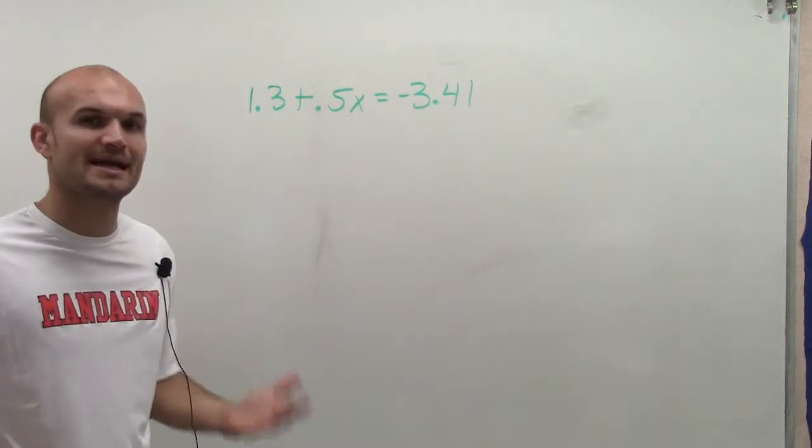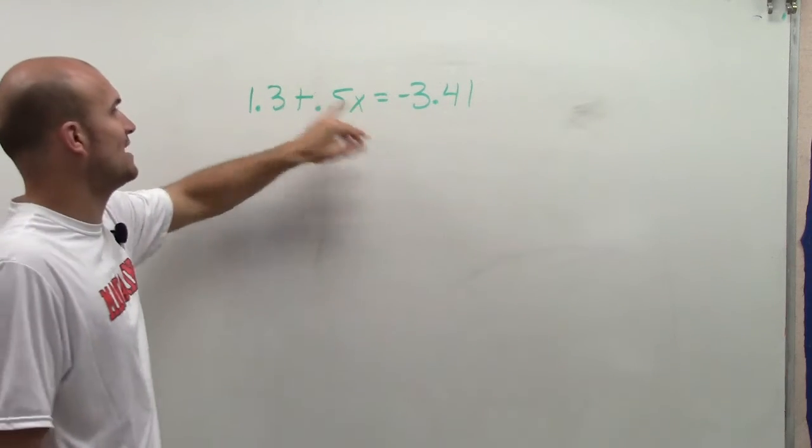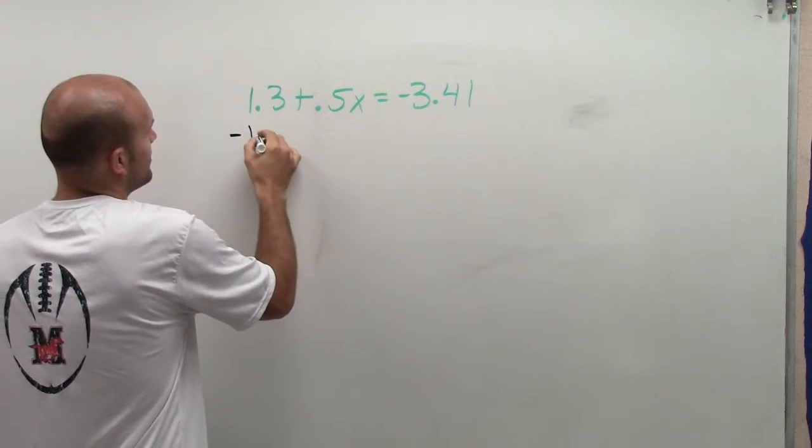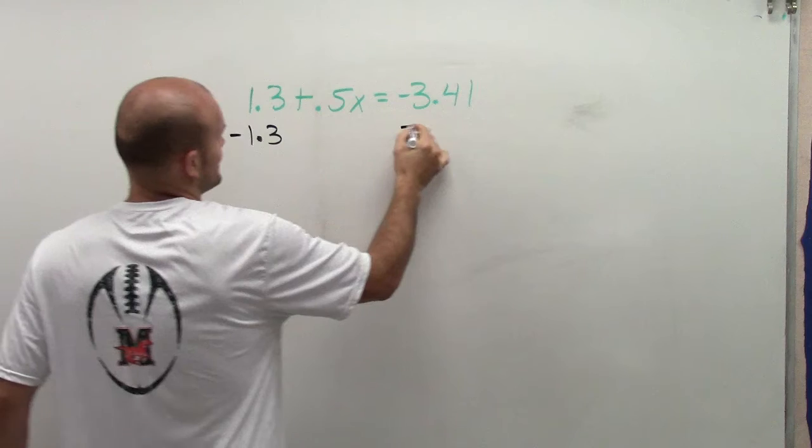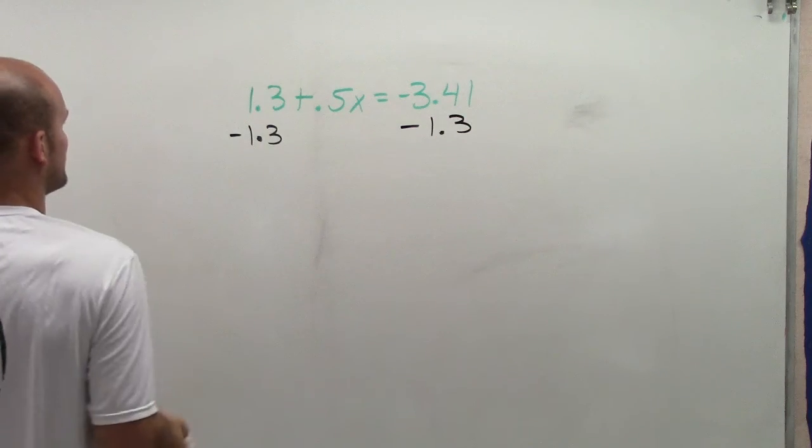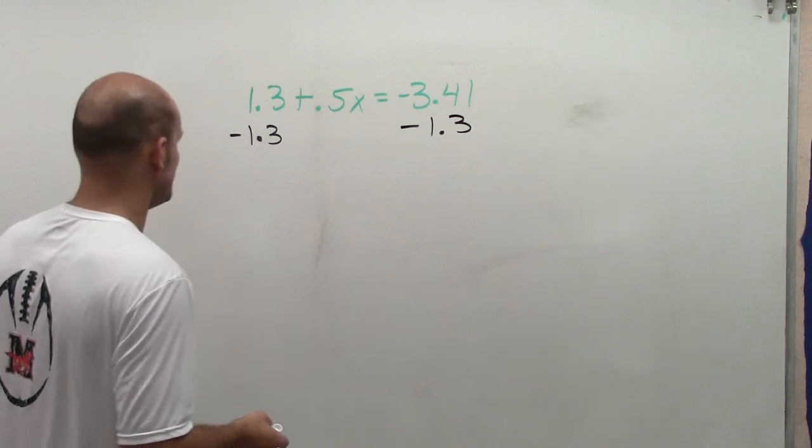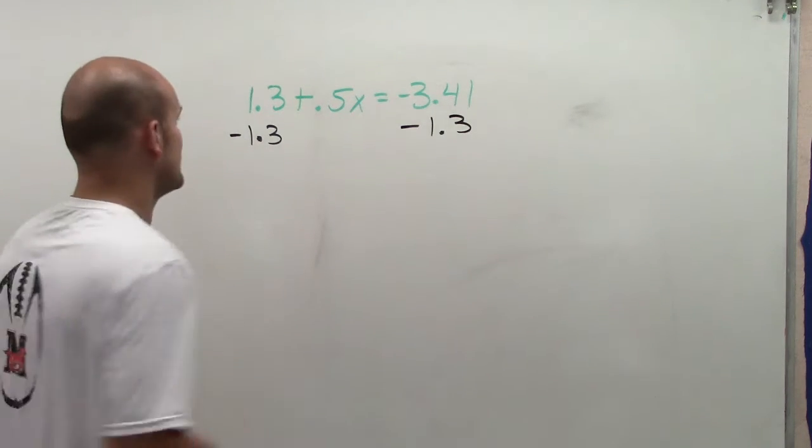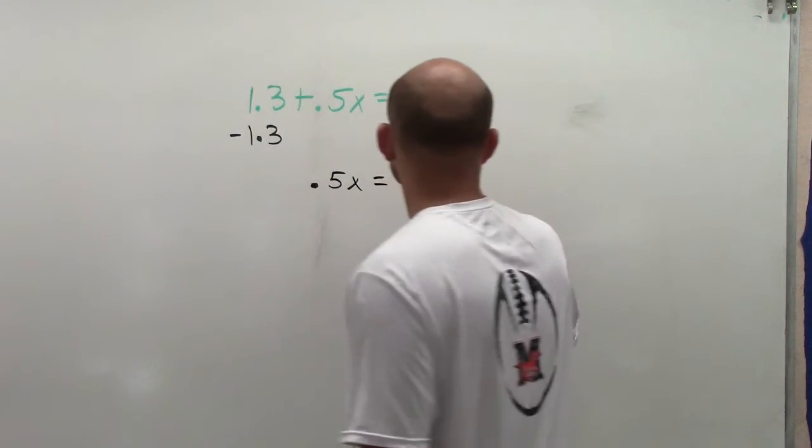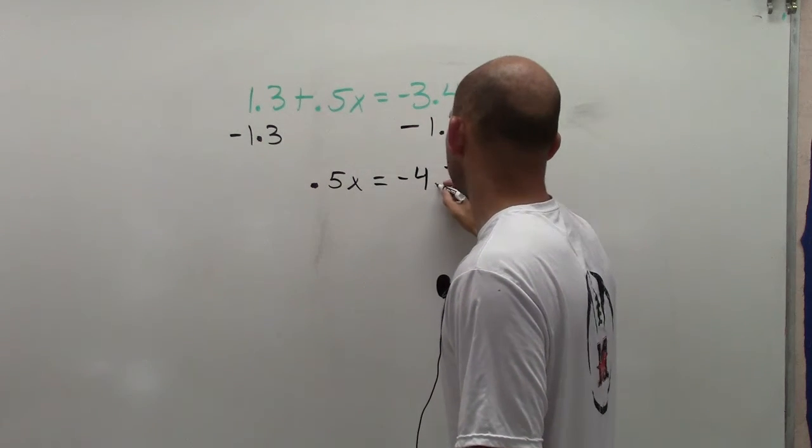So again, I'm just going to use my inverse operations. What is happening to my variable x? Well, it's being multiplied by 0.5 and it's being added by 1.3. So to undo adding 1.3, I need to subtract 1.3 on both sides. Well, 1.3 minus 1.3 is obviously zero. So therefore, I'm just left with 0.5x equals negative 4.71.